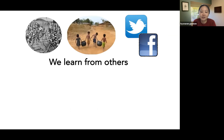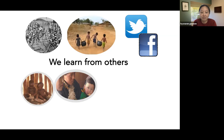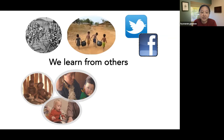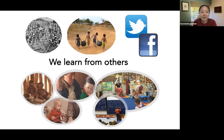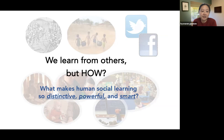As individuals — not just as a species — as soon as we're born, we're surrounded by other people. We observe their actions, their behaviors, we track them, we learn from them, we think about what's in their minds. Humans have even created cultural institutions to promote and facilitate social learning, from the way we raise our children to schools and educational systems. We're all part of an institution we call university, where the whole purpose is to learn about the world and share that with others. So it's obvious that we learn from others, but the question is how we do that, and that's the driving question that guides our research. What makes human social learning so distinctive, powerful, and smart, and how does the brain support such learning?